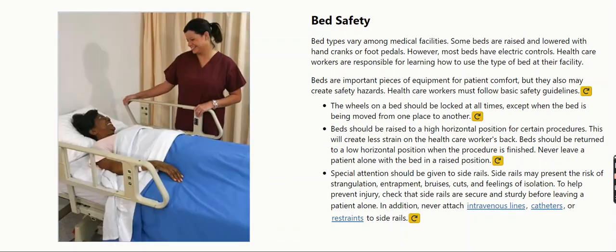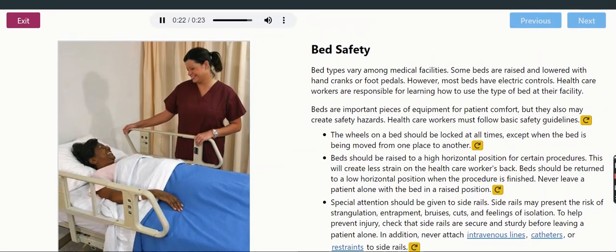Special attention should be given to side rails. Side rails may present the risk of strangulation, entrapment, bruises, cuts, and feelings of isolation. To help prevent injury, check that side rails are secure and sturdy before leaving a patient alone. In addition, never attach intravenous lines, catheters, or restraints to side rails.